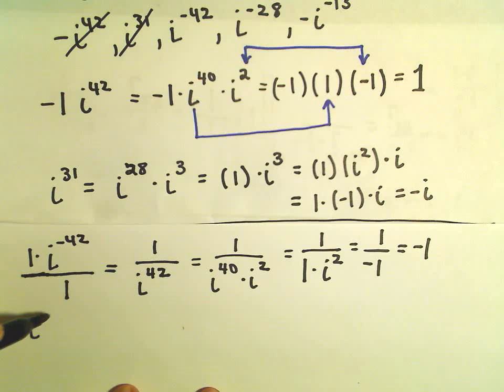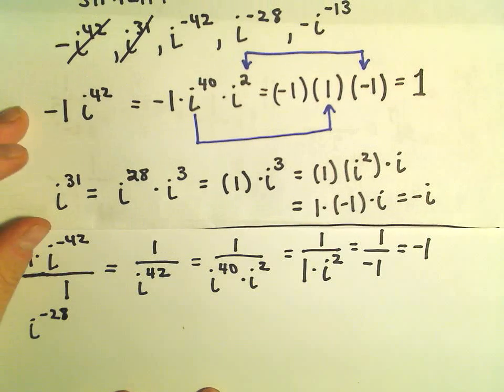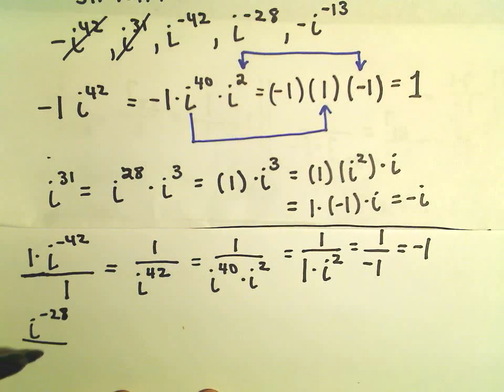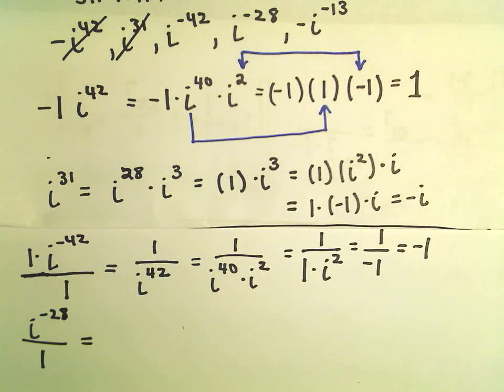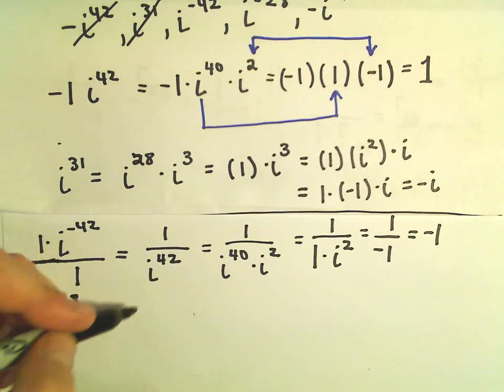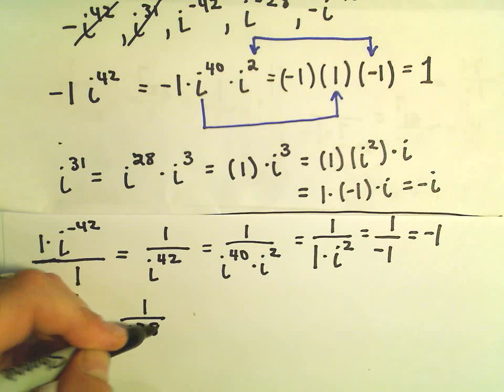Okay, so i to the negative 28, that was our second example in this video. I'm going to rewrite that over 1. Again, the trick is we can rewrite this as 1 over i to the positive 28.